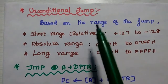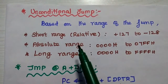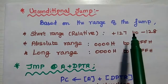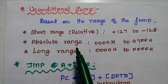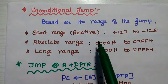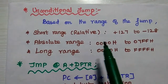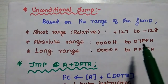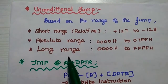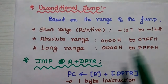Unconditional jump means once the instruction is executed, the program flow is transferred to the new address with no conditions to be checked. Based on the range of the jump, unconditional jump is classified into three categories: short range, which transfers control within the range of plus 127 to minus 128; absolute range, from 000 to 07FEF (around 2000 memory locations); and long range, which transfers control anywhere in memory from 0 to 64000.